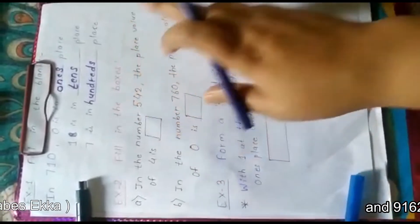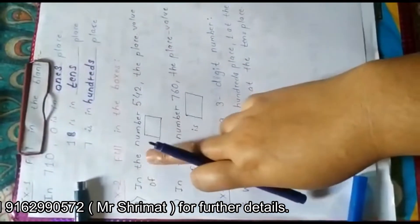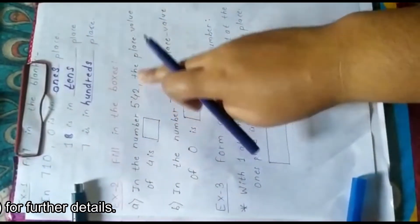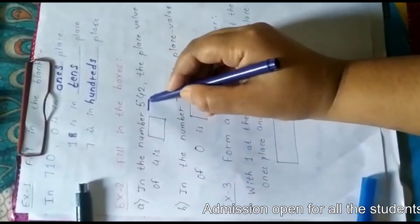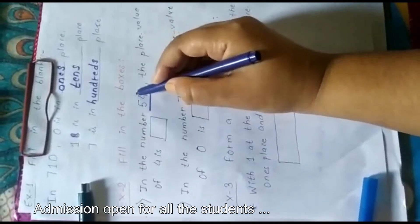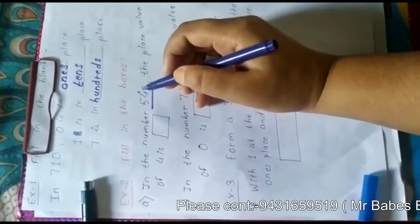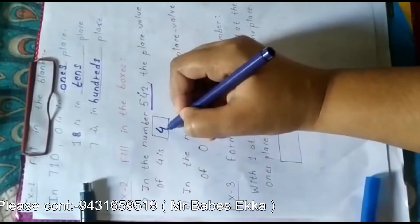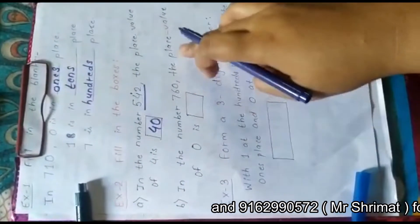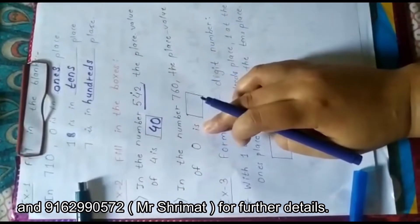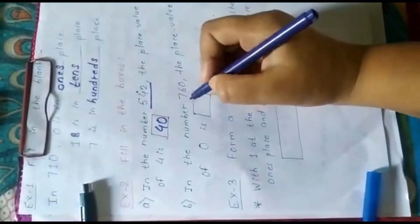Example two: fill in the boxes. In the number 542, the place value of 4 is — you can see 4 is at tens place, so the place value of 4 is 4 tens, which means 40. In the same way, in the number 760, the place value of 0 is — we already know the place value of 0 is always 0.